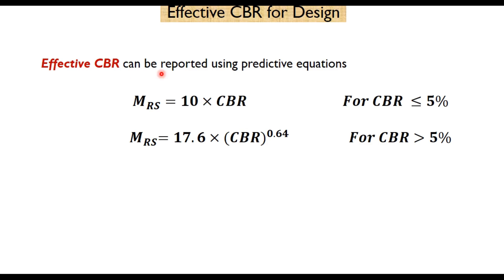This conversion is not required for the design but it is required to check whether the effective CBR of subgrade is more than 5 percent or not, because IRC suggests that CBR of subgrade soil should be at least 5 percent if the commercial vehicles is more than 450 per day.